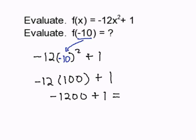Now I simply evaluate this. Negative 1,200 plus 1 is going to get me negative 1,199. And this completes our problem of evaluating a function.